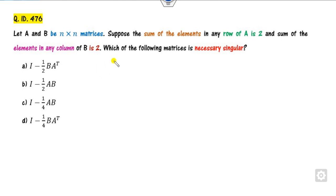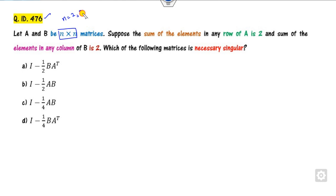Today's topic is linear algebra. The question involves two N×N matrices A and B. Reading the first line, it is not given that eigenvalues are distinct. To solve using the options, since it is N×N, try taking a convenient value of N — either N=2 or N=3. Let's consider 2×2 to discard the options.